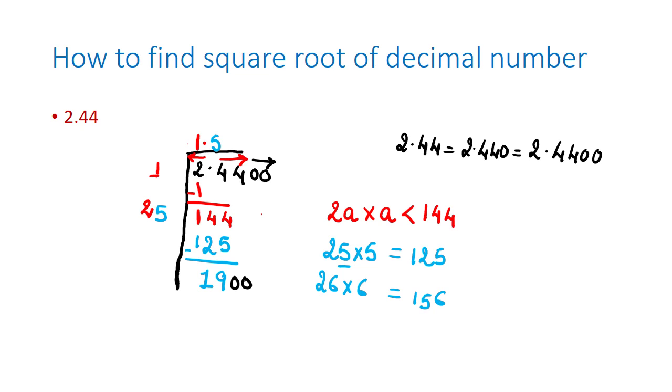So next, with this 25 I add this 5, that gives me 30: 3 in the hundreds place, 0 in the tens place, and I need to find out my units again. So that unit should be something which I multiply again and it should be less than 1900. So I need to find out 30B×B where this product is less than 1900.